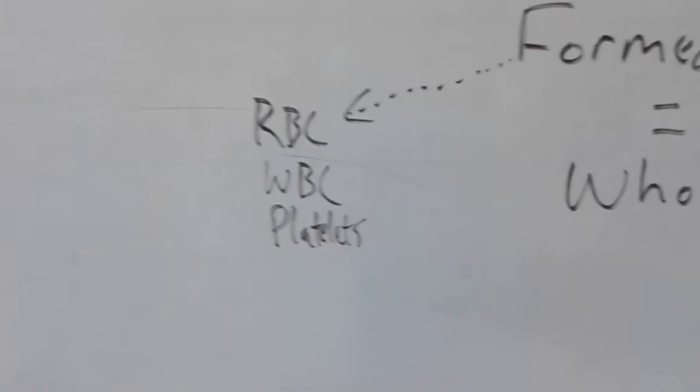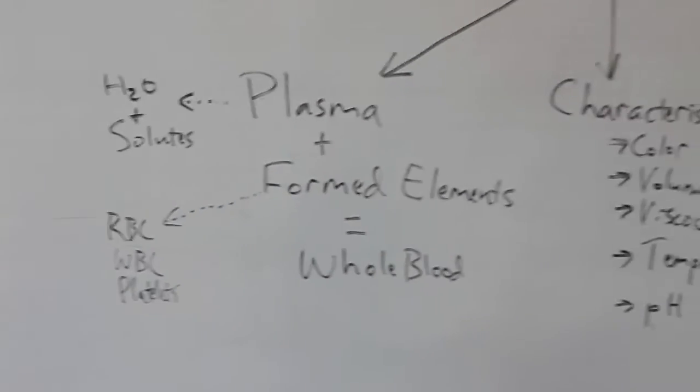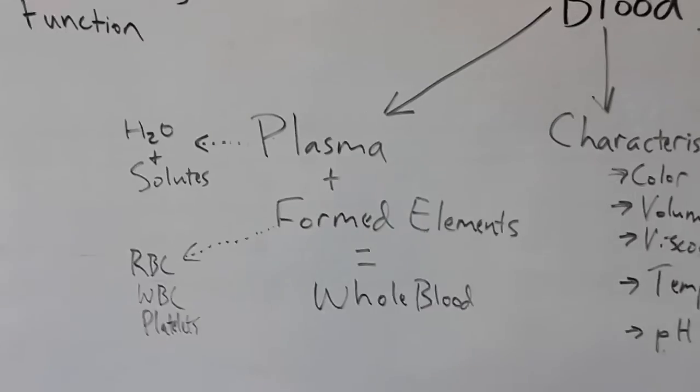Formed elements is just talking about these three things: red blood cells, white blood cells, and platelets. And we will talk about them a little more in detail when we go around the circle.